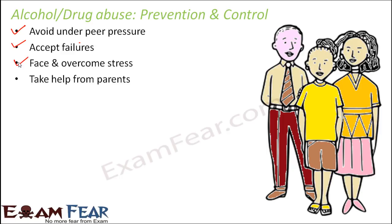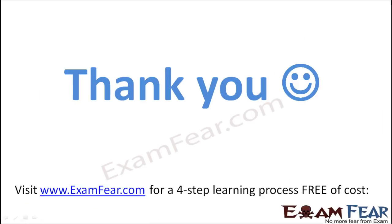Take help from parents - you should always discuss things, good or bad, with your parents because they have better experience. At a tender age you may not be able to differentiate between right and wrong, but your parents are your best guide and can help you make the right decision. Seek medical help if required - if you think you have already indulged in activities like taking drugs or alcohol, you can seek the help of a doctor.